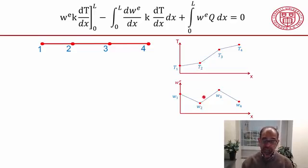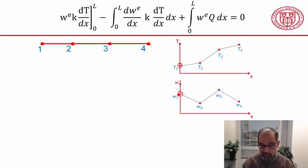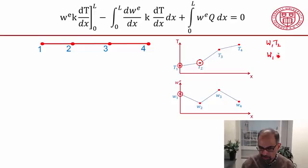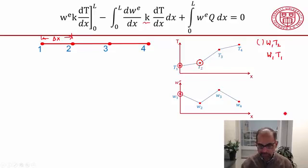When I do this integration element by element, over the first element I'll get terms where w1 multiplies t1, and I'll also get a term where w1 multiplies t2. So I'll get a term involving w1 times t2 and w1 times t1, with some constant coefficients you have to work out — they'll depend on k and on the element length.